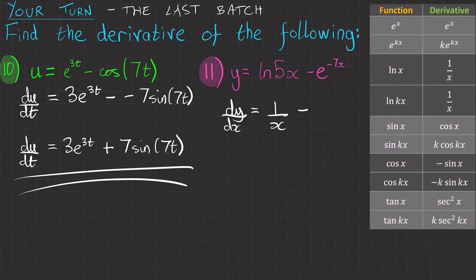Our second term is e to the minus 7x. So we've got e to the kx, which becomes ke to the kx. So we've got minus 7e to the minus 7x. Seeing as we have two minuses next to each other,